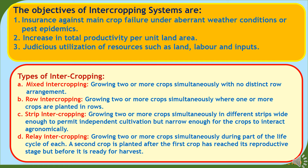Now we will discuss about different types of intercropping. First is mixed intercropping, which represents growing two or more crops simultaneously with no distinct row arrangement. Second is row intercropping, which refers to growing two or more crops simultaneously where one or more crops are planted in rows. Third is strip intercropping — growing two or more crops simultaneously in different strips wide enough to permit independent cultivation but narrow enough for the crops to interact agronomically. And fourth is relay intercropping, which refers to growing two or more crops simultaneously during part of the life cycle of each; a second crop is planted after the first crop has reached its reproductive stage but before it is ready for harvest.